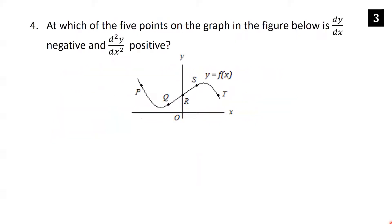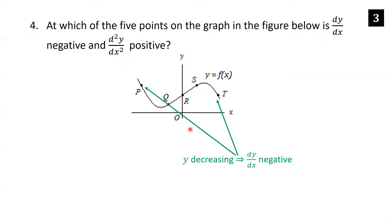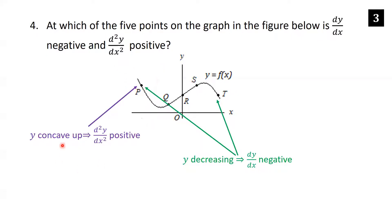At which of the five points on the graph is dy/dx negative and d²y/dx² positive? We want the first derivative negative (function decreasing) and second derivative positive (concave up). The function is decreasing at points P and T, so the answer is either P or T. At P the function is concave up and at T it is concave down. Since we need the second derivative positive, the answer is point P.